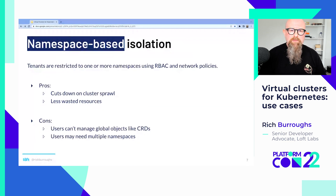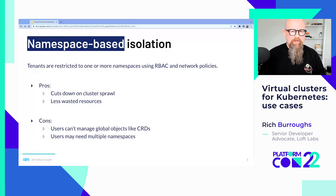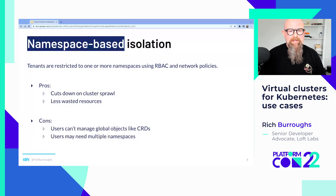Another con: users may need access to multiple namespaces. They might need to run multiple microservices in different namespaces that need to talk to each other. Then you're making network policy exceptions and things can get really complex.